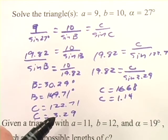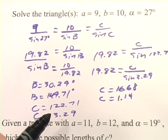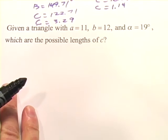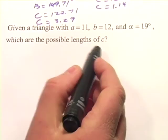So we've solved the triangles, two of them, using this law of sines with an ambiguous case. Let's try one more of these. In this one, we're just trying to find the possible lengths of C.